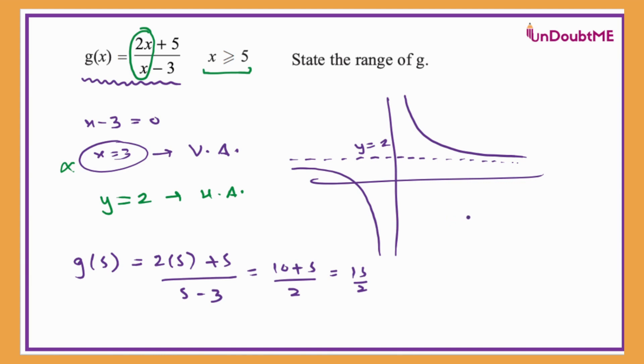So it means that the value of y, the value of g(x), is less than or equal to 15 by two.